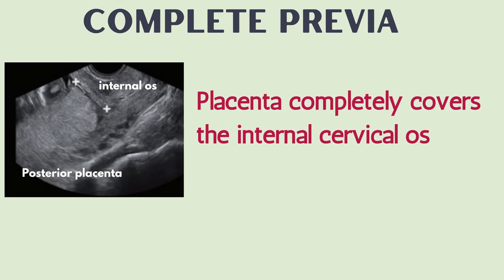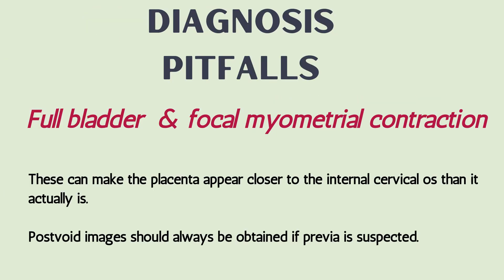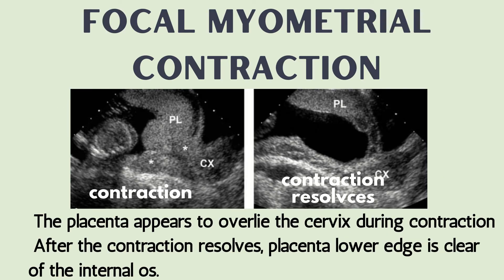Two diagnostic pitfalls are full bladder and focal myometrial contraction. These can make the placenta appear closer to the internal os than it actually is. Post-void images should always be obtained if previa is suspected. This is an example of focal myometrial contraction — the placenta appears to overlie the cervix during contraction, but after the contraction resolves, the placenta's lower edge is clear of the internal os.